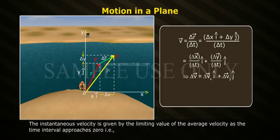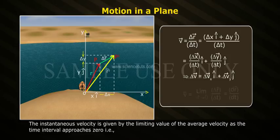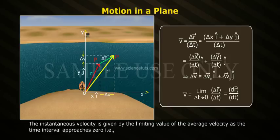The instantaneous velocity is given by the limiting value of the average velocity as the time interval approaches zero. That is, V bar equals limit as ΔT tends to zero of ΔR bar by ΔT, which equals dR bar by dT.